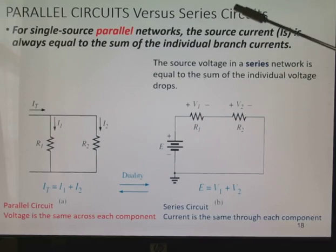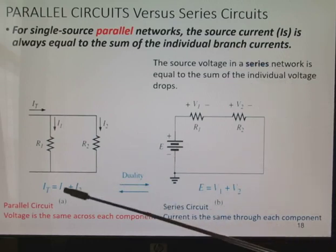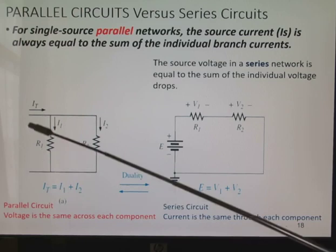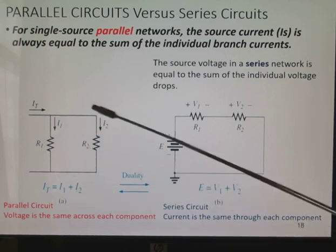So for a parallel, for a single source parallel networks, the source current is always equal to the sum of the individual voltages. So IT or IS, the source current or the total current, entering this node equals I1 plus I2.